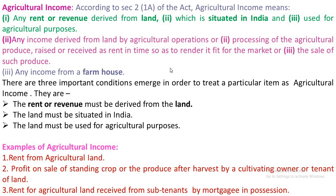Agricultural income is any rent or revenue derived from land which is situated in India and used for agricultural purposes. Any income derived from processing of the agricultural produce or sale of agricultural produce is treated as agricultural income. Any income from a farmhouse is also considered as agricultural income.